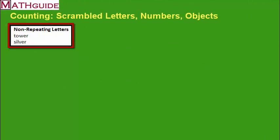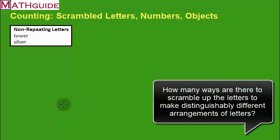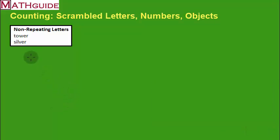In our first section we're going to talk about non-repeating letters. So let's say we had the word tower. We want to see how many ways are there to scramble up the letters in this word and look at all the possible ways I could rewrite those letters. So to understand this,